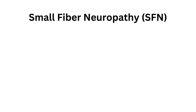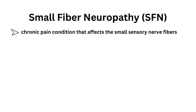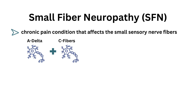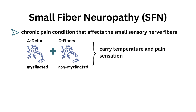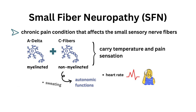Small Fiber Neuropathy is a chronic pain condition that affects small sensory nerve fibers, specifically A-delta and C fibers. A-delta fibers are myelinated and C fibers are non-myelinated. These fibers carry temperature and pain sensation after mechanical or thermal stimulation of the skin. In addition, C fibers are involved in autonomic functions that control various bodily functions like heart rate, sweating, and blood pressure.